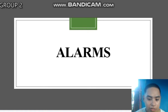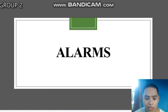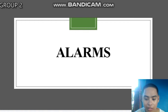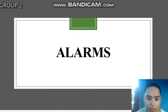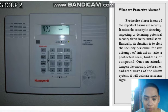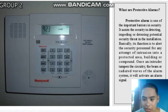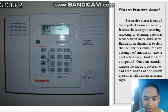The next topic is alarms. An alarm is designed to warn against burglars or intruders or potential threats in our residence. It gives warning to the resident or homeowner that there is someone — an unwanted guest — wanting to enter. That is a protective alarm. A protective alarm is one of the most important barriers in security. It assists security in detecting, impeding, or deterring potential security threats. Its function is to alert security personnel of an attempted intrusion into a protected area, building, or compound. Once an intruder tampers with the alarm system's beam or related waves, it will activate the alarm signal.